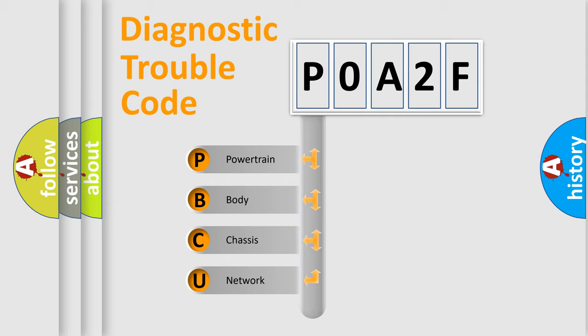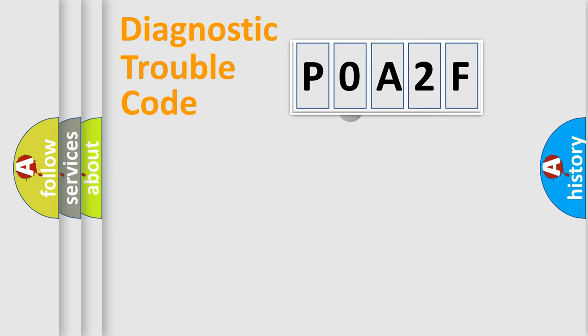We divide the electric system of the automobile into four basic units: Powertrain, Body, Chassis, and Network. This distribution is defined in the first character code.